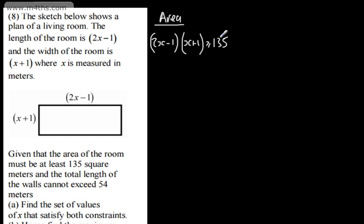Let's rearrange this and set this side to 0. Expanding out, we're going to have 2x squared plus 2x minus x minus 1 is equal to or greater than 135. Tidying up in the form ax squared plus bx plus c, we're going to have 2x squared plus x minus 136 is equal to or greater than 0.